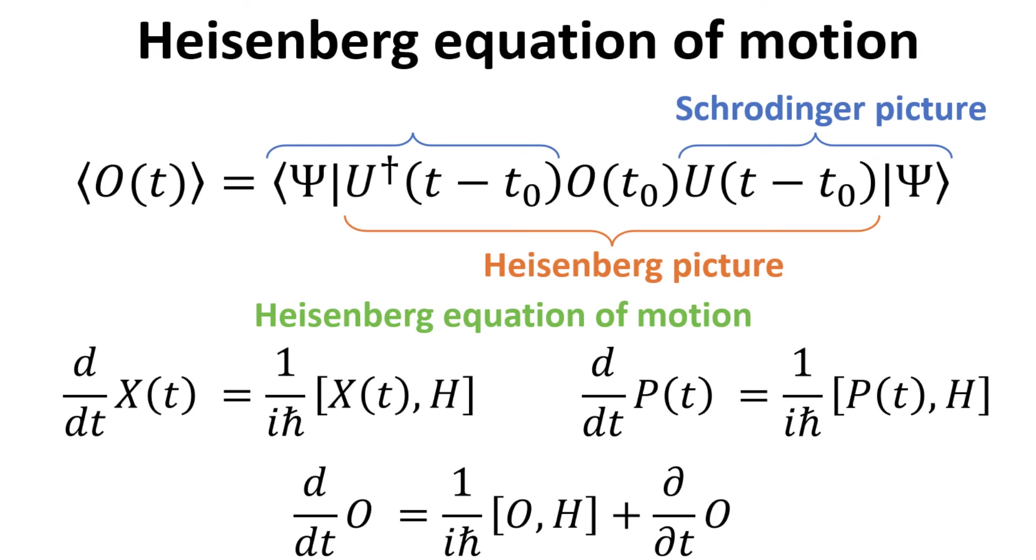Herein, pictures mean the different ways of attributing the time dependence in quantum mechanics. The physics, most importantly the expectation value of physical observables, would all be the same in these different pictures. The choice in adopting a particular picture has more to do with the convenience of the approach in solving the problem.